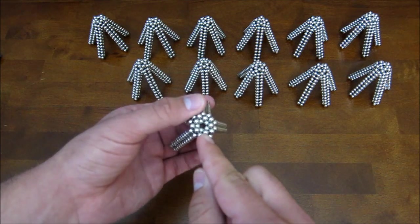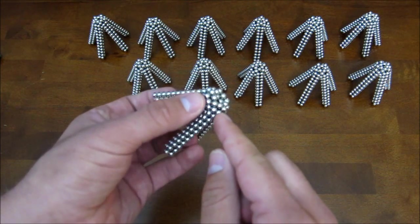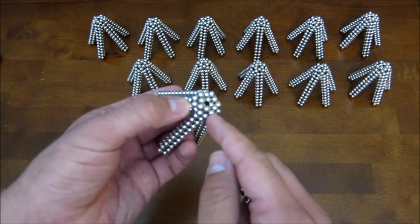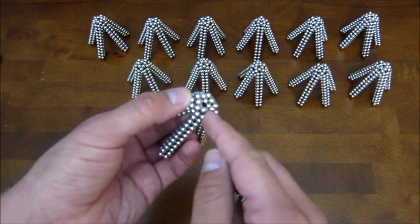Next thing you want to do is take away the five magnets that form a little ring on the very tip. Just like that. Now you want to take away five more magnets - you can see there's kind of a raised lip that forms a pentagon around the outside.